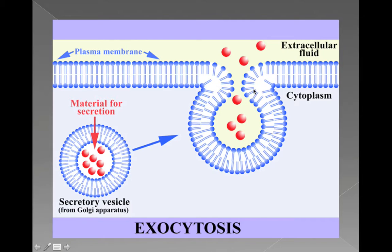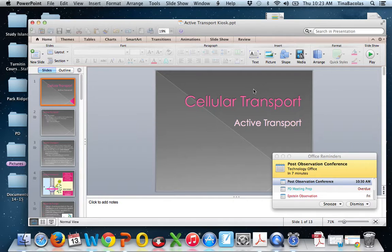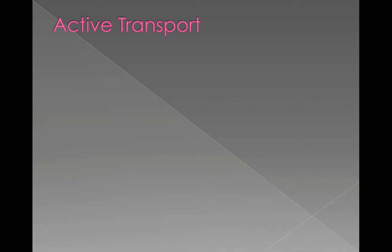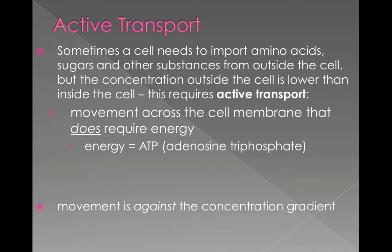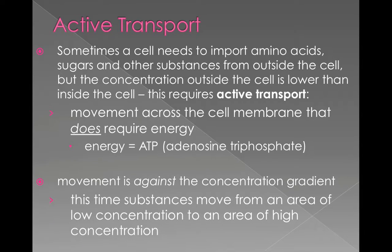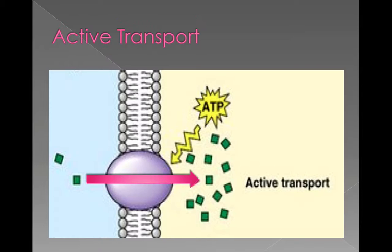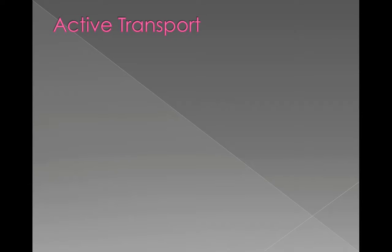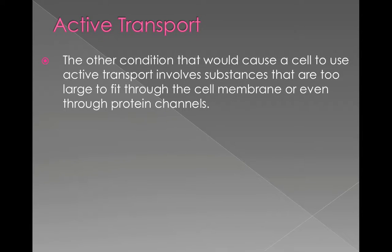That wraps up active transport. Remember, active transport is the movement into or out of a cell that requires energy. The two conditions that cause active transport instead of passive are: things moving against the gradient from low to high, or things being too large to pass through the cell membrane and needing to be packaged in a vesicle. Too big or against the gradient — you have to use energy, or ATP.